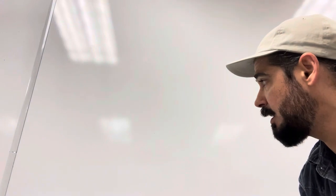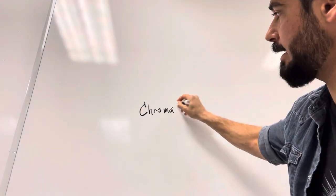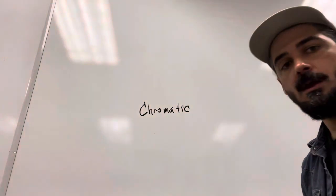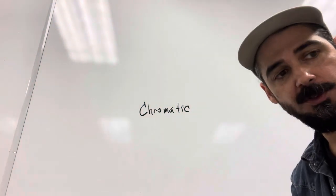Alright, so today what we're going to be talking about is the chromatic scale. This is going to be a part of a series of videos that are going to take us all the way up to making major scales. But first, we've got to know what are all of our available notes to make these major scales, and that's what a chromatic scale is. The chromatic scale is all of the notes available to us.